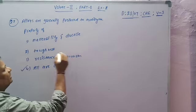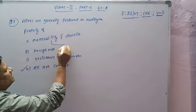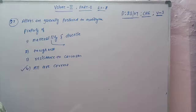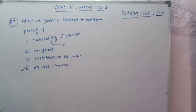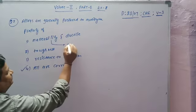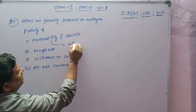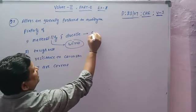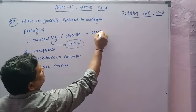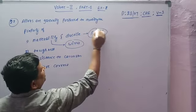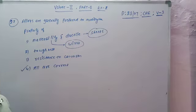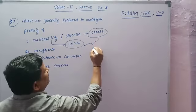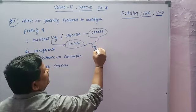Generally, malleability means if a metal is strongly heated and then strongly hammered, it is converted into sheets or wipes — this is called malleability. When a metal is converted into sheets by drawing, it is called ductility.